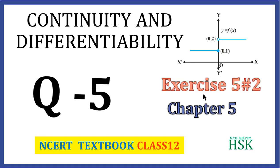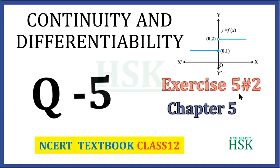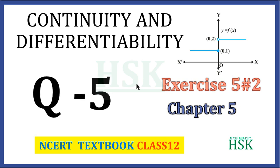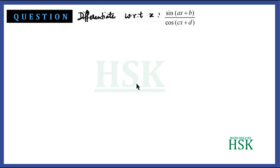This is question number 5 of exercise 5.2 from the chapter Continuity and Differentiability. The question is: differentiate with respect to x, sine of (ax + b) upon cos of (cx + d).